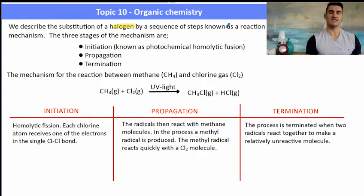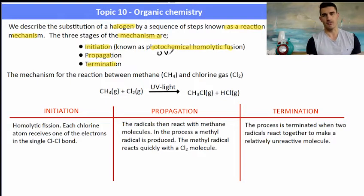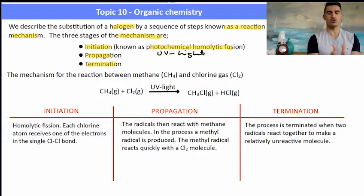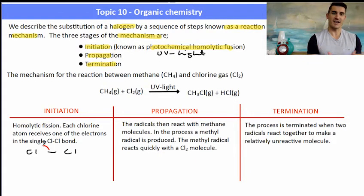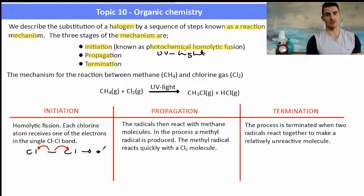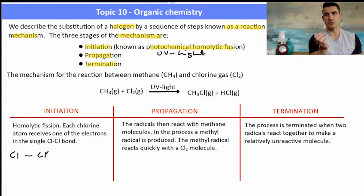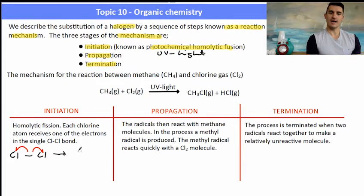We describe this substitution by a sequence of steps known as a reaction mechanism. The three parts are initiation, propagation, and termination. Initiation begins with photochemical homolytic fission — UV light provides the photochemical part, homolytic means splitting into two equal parts, and fission means breaking the bond. The initiation involves a chlorine molecule Cl–Cl splitting in half by UV light, so one electron goes to each chlorine, producing two chlorine radicals represented with a dot: •Cl.